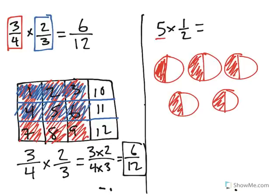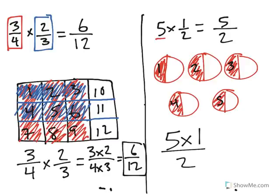The question is: what is the total number shaded? I can count 5 pieces shaded, and all of my circles are still broken into 2, so my denominator remains 2 — giving 5 halves. A simple way to do this is to multiply the whole number times the numerator — 5 times 1 — and the denominator stays the same.